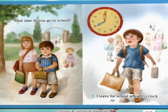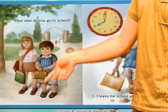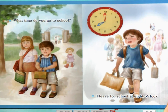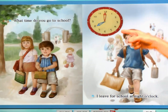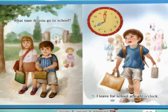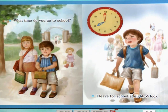Next page. Here we go. He's going — where is he going? He's going to school. What time do you go to school? 학교. 몇 시에 학교에 가요? Let's look at the clock. This clock has 8 — looks like 8 o'clock. The boy says, I leave for school at 8 o'clock. I leave for school at 8 o'clock.